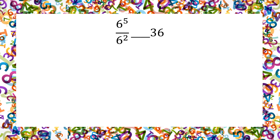6 to the 5th divided by 6 squared — we need to know if it's less than, greater than, or equal to 36. So we're going to subtract the exponents, because they're using the same base: 5 minus 2 is 3.